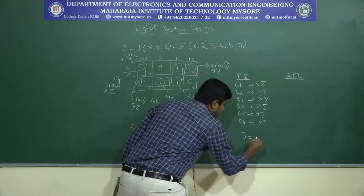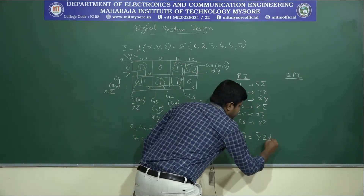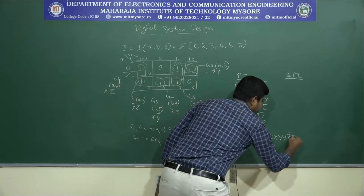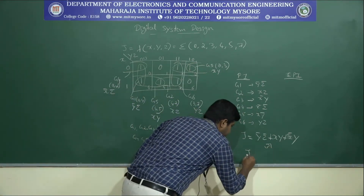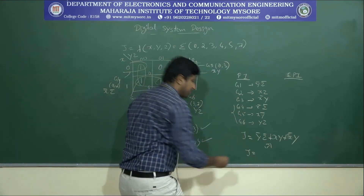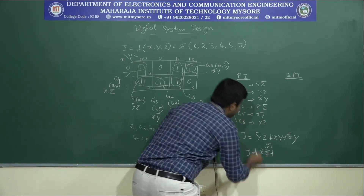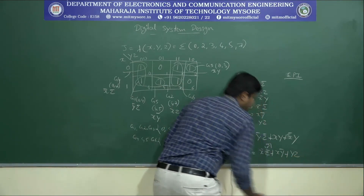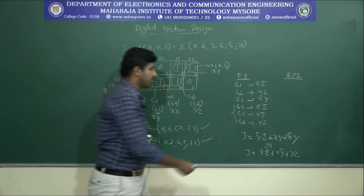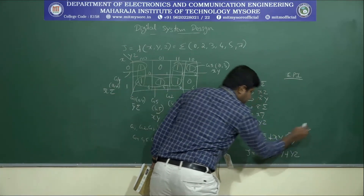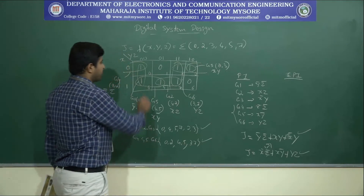The simplified equation g can be written using groups 1, 2, and 3 as: g = ȳz̄ + xz + x̄y. Alternatively, using groups 4, 5, and 6: g = x̄z̄ + xȳ + yz. Both expressions are logically the same. This is an example where two equally simplified results are possible.